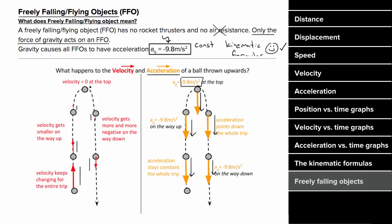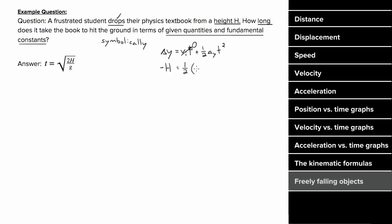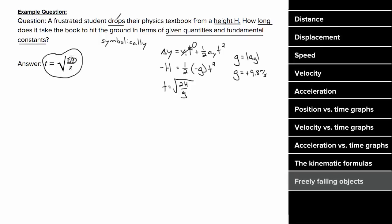For example, if a student drops a book from height h and we want to know how long it takes to hit the ground in terms of given quantities and fundamental constants, we solve symbolically. Delta y is negative h since the book dropped down. Initial velocity is zero since the book was dropped. The vertical acceleration is negative g, where little g is the positive magnitude 9.8 meters per second squared. Solving for time gives the square root of 2h over g — our symbolic answer.